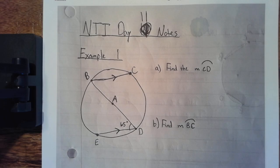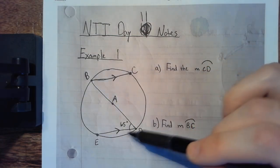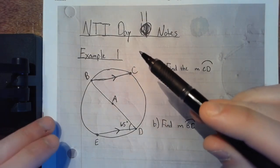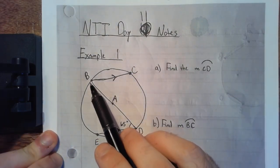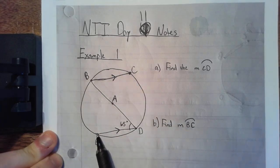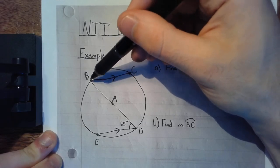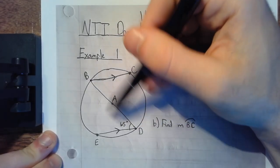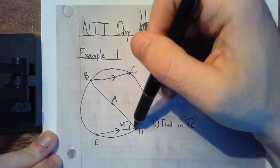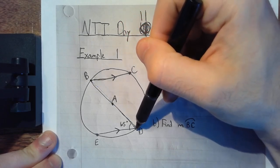Let's look at Example 1 on these Day 11 notes. We have this circle with points B, C, and E, D. We have chord BC, we have chord ED — chords are the line segments across the points of the circle. Then we have this chord connecting B, A, D. Since A is the center of the circle, BD is the diameter.